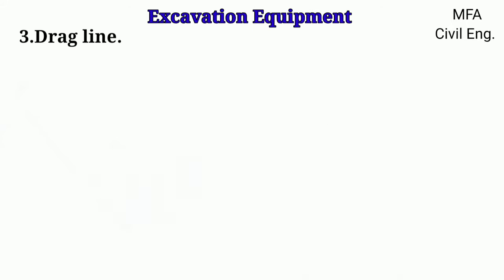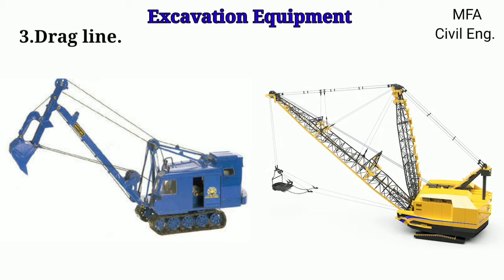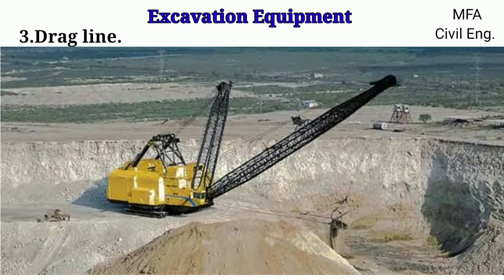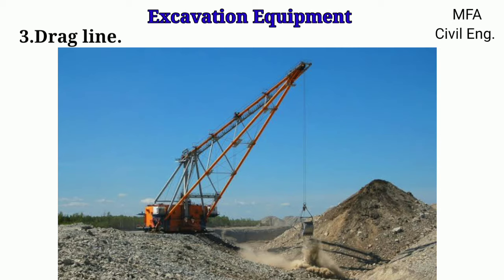The dragline is named because of its prominent operation of dragging the bucket against the material to be dug. Unlike the shovel, it has a long, light crane boom and the bucket is loosely attached to the boom through cables. Because of this construction, the dragline can dig and dump over a larger distance than shovels. Draglines are useful for digging below their track level and handling soft materials.